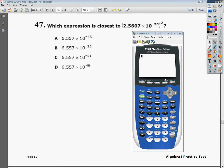It reads, which expression is closest to 2.5607 times 10 to the 23rd, all raised to the second power?